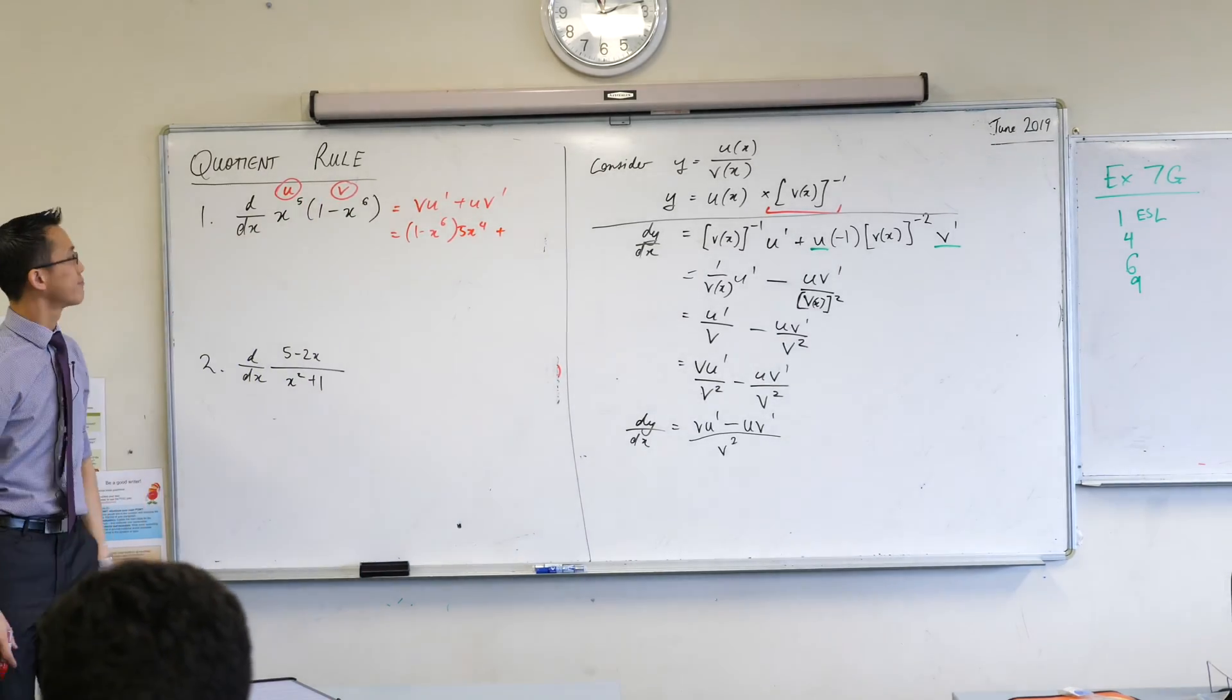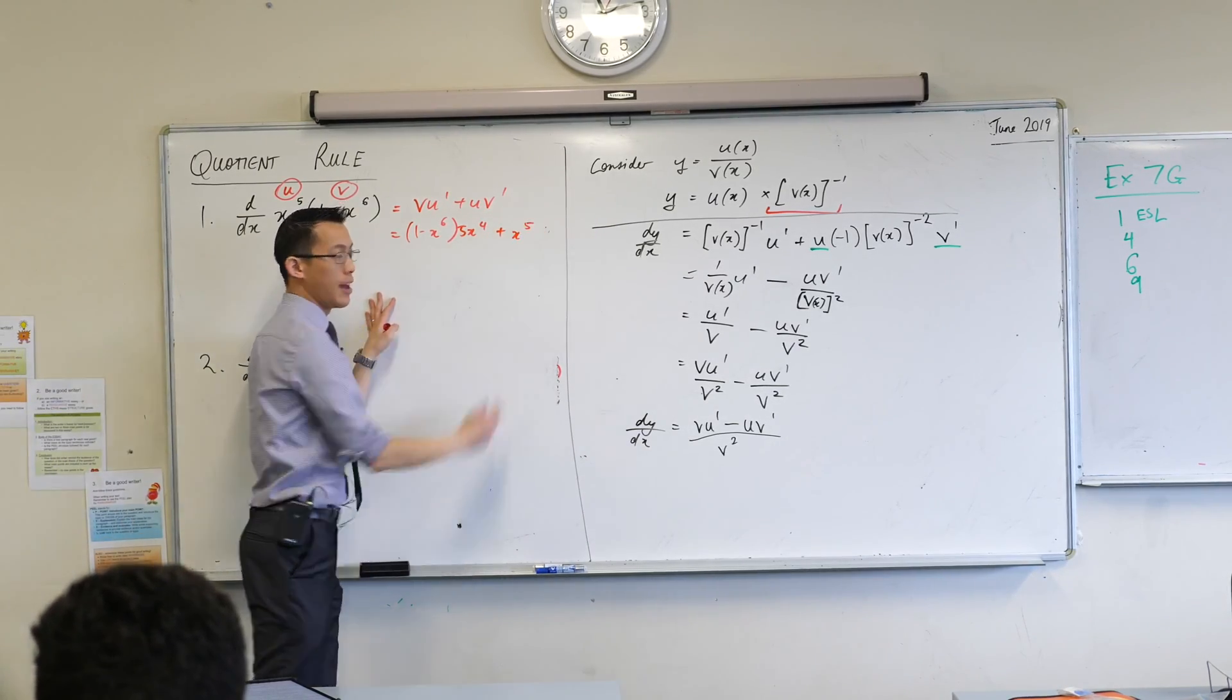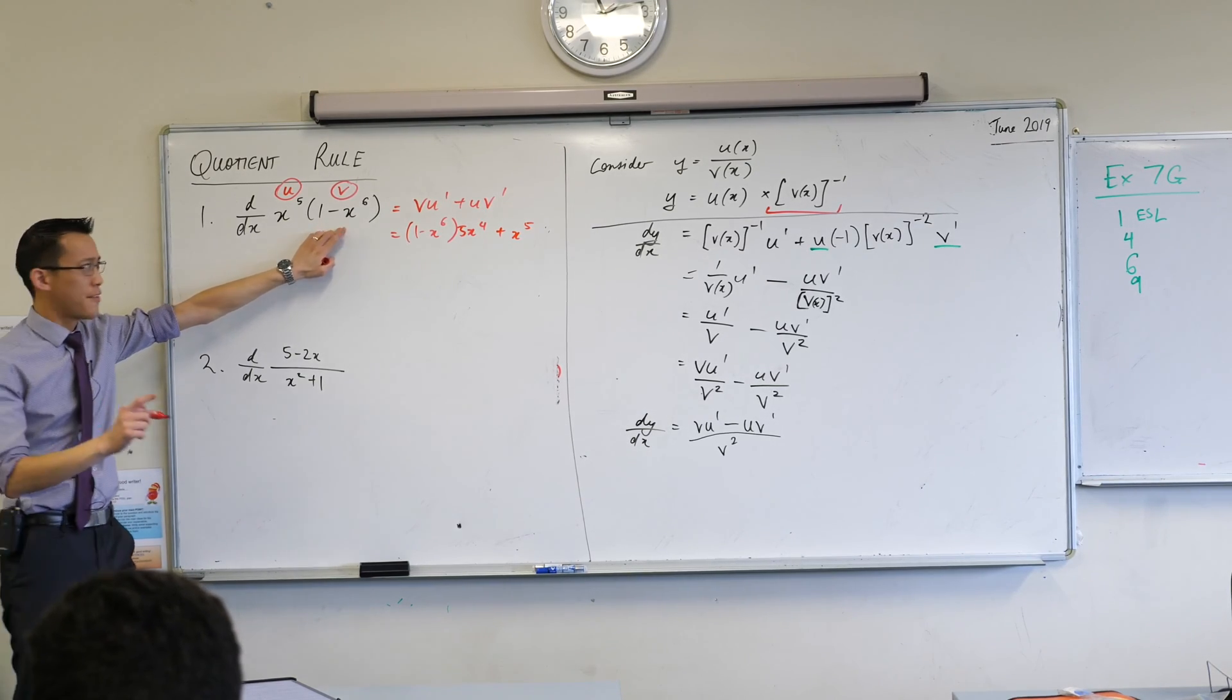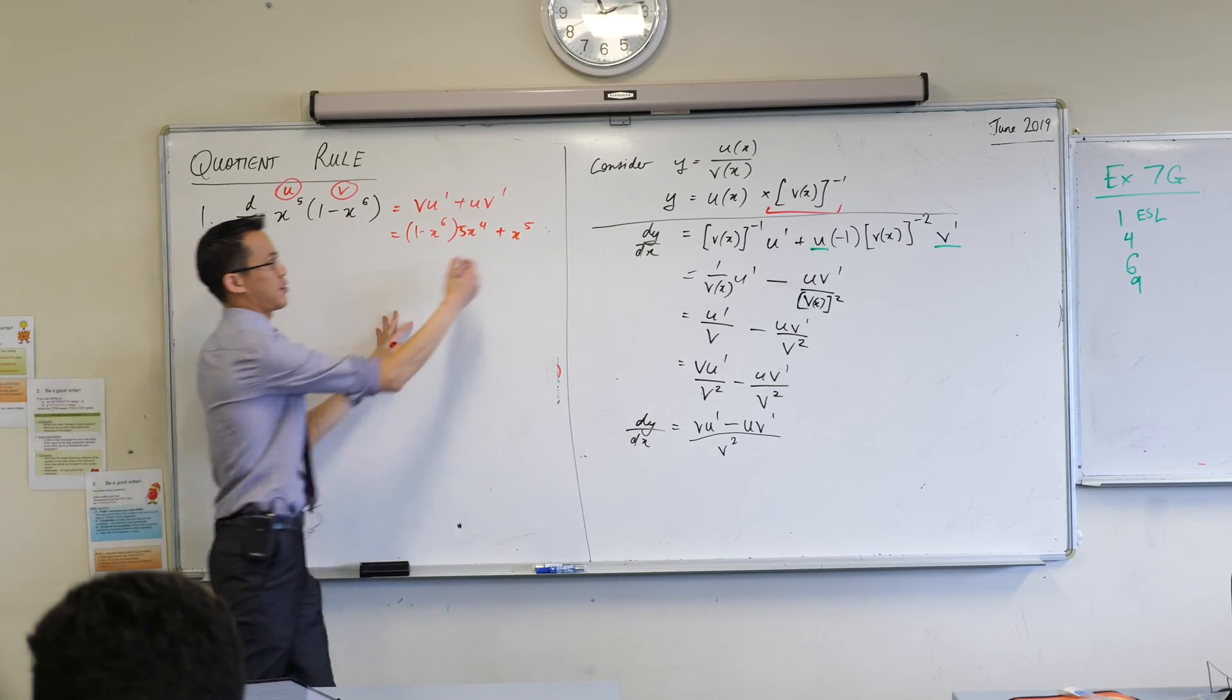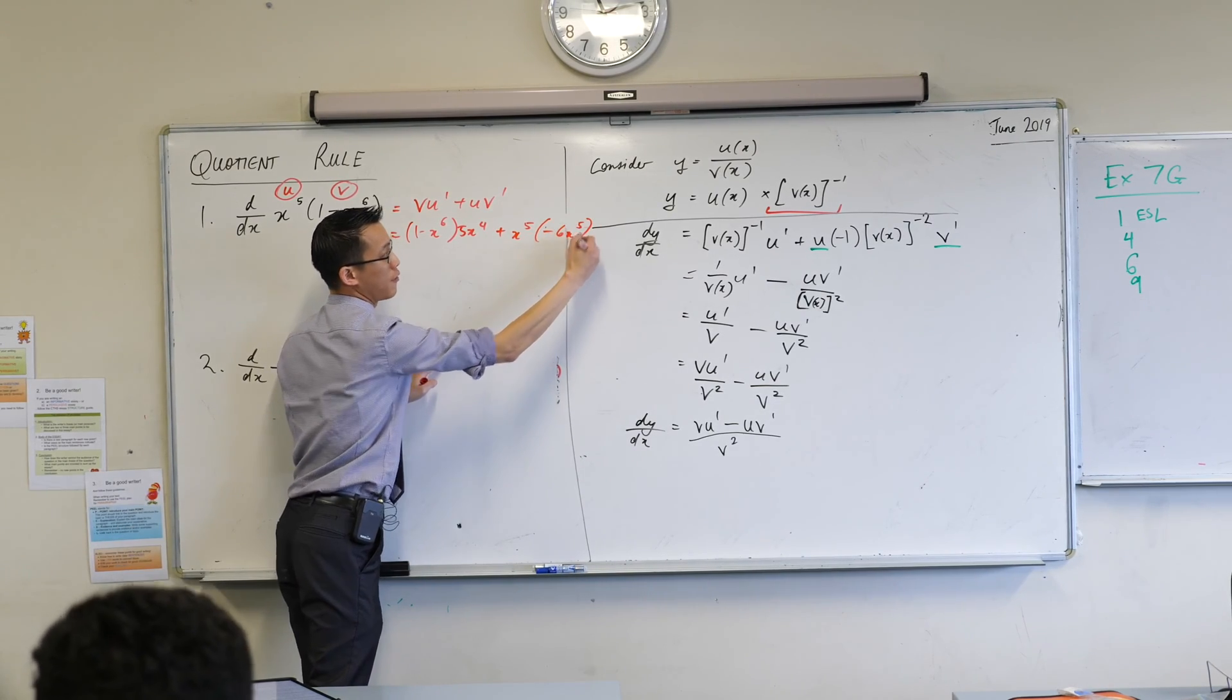So there's the first half, now let's do the second half. What's u by itself? Great, doesn't need any change. x to the 5. And then the last piece, v', let's have a look carefully. Very good, you got that minus sign, right? So minus 6x to the 5. Fantastic.